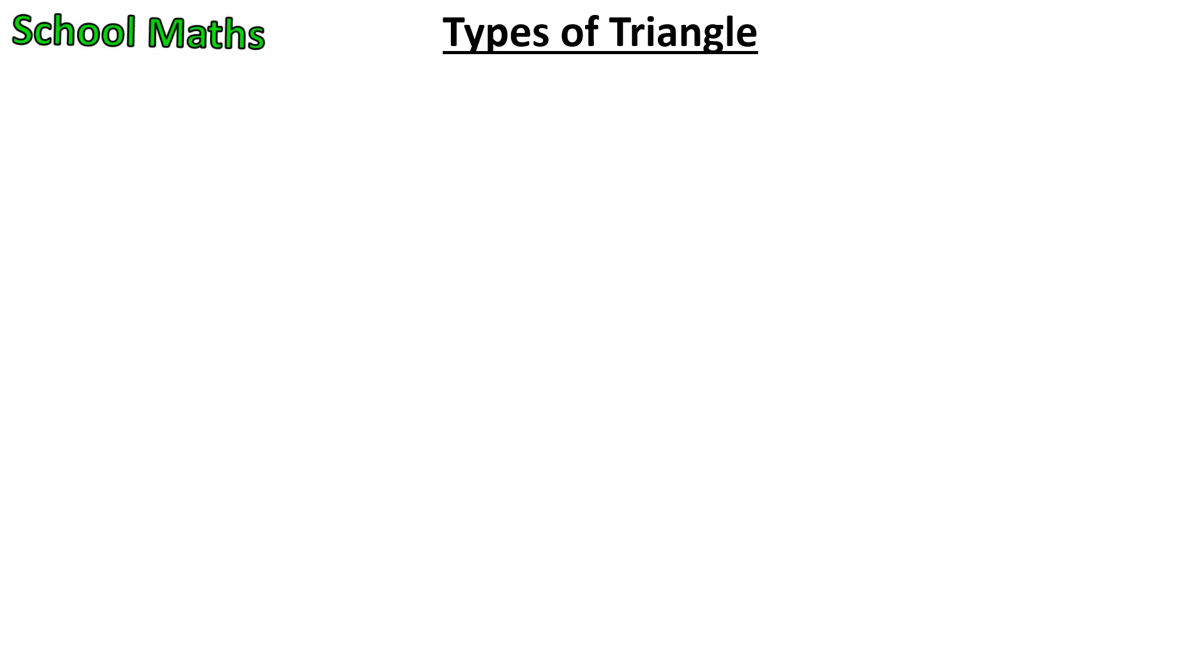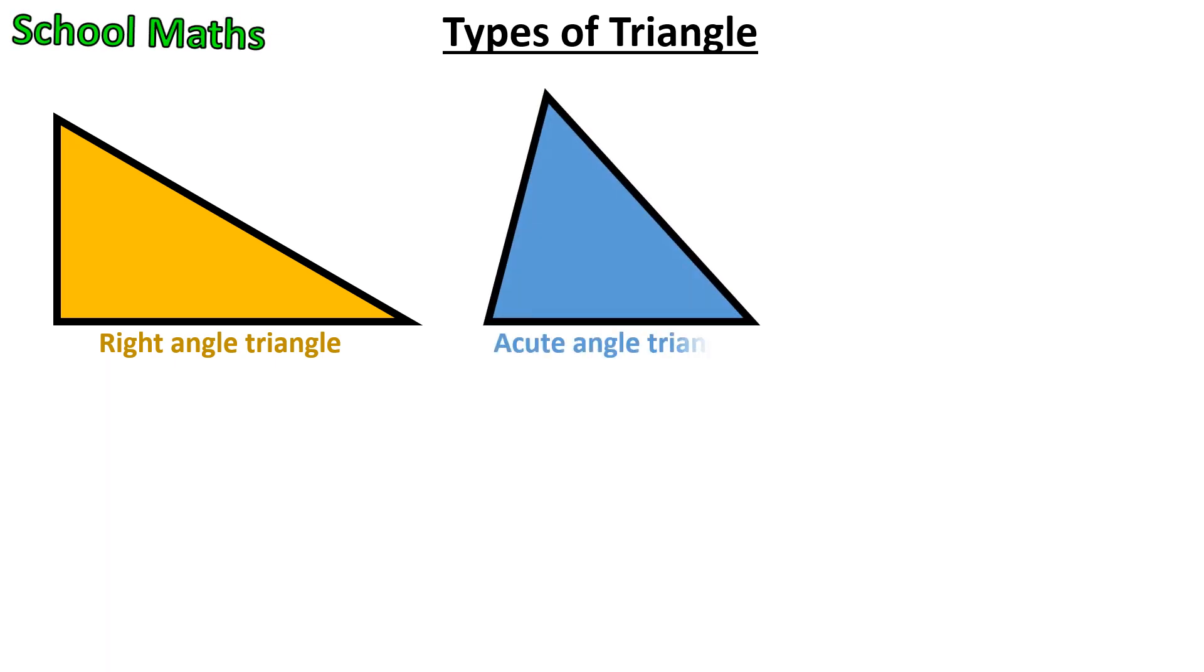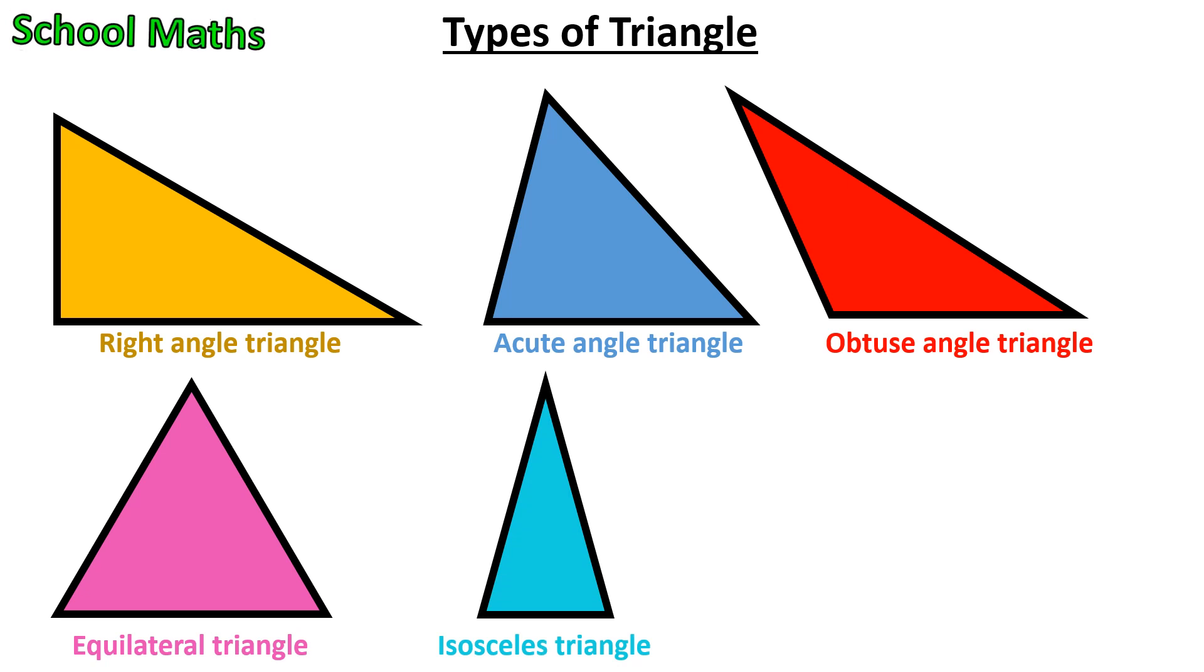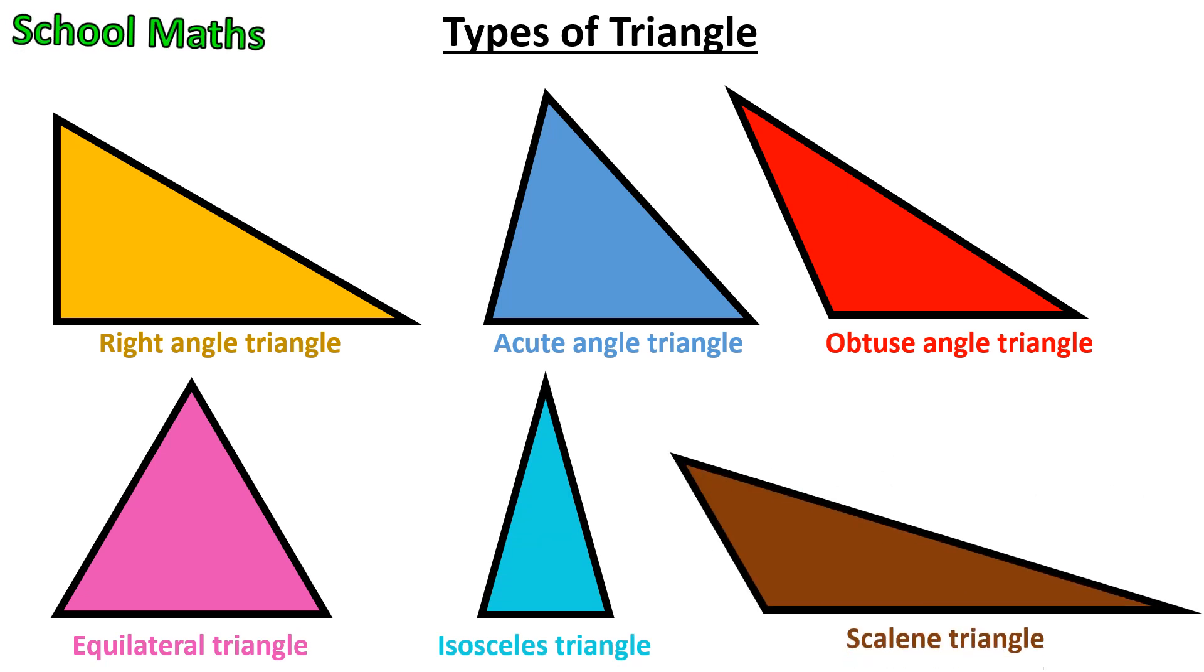The names of triangles are Right Angle Triangle, Acute Angle Triangle, Obtuse Angle Triangle, Equilateral Triangle, Isosceles Triangle, and Scalene Triangle.